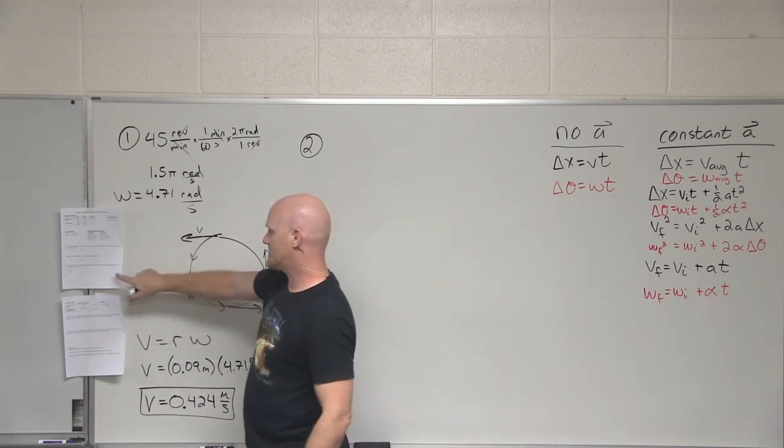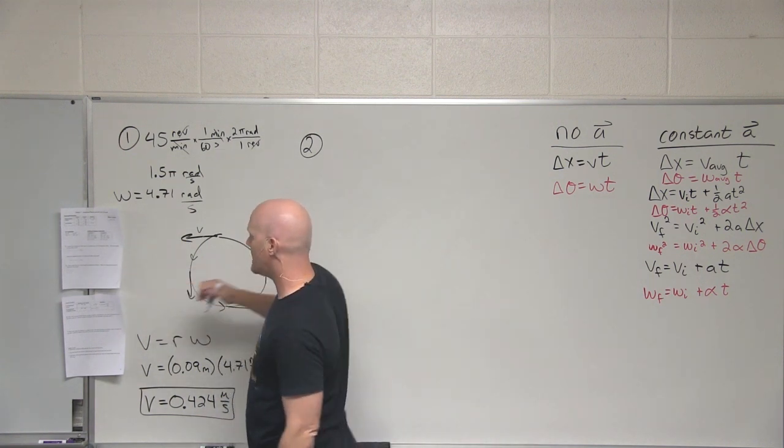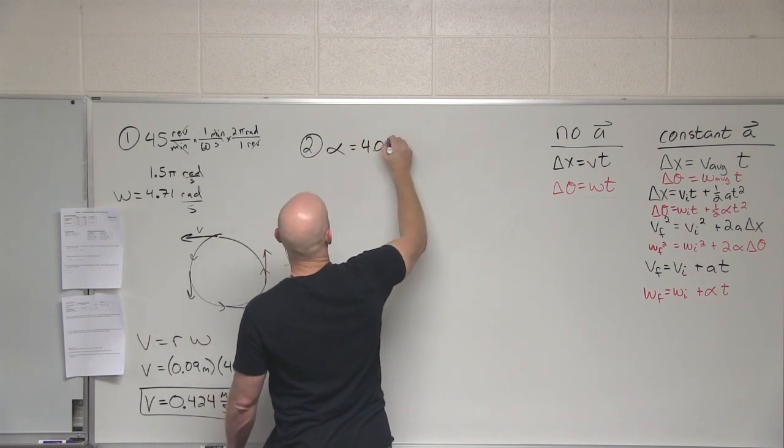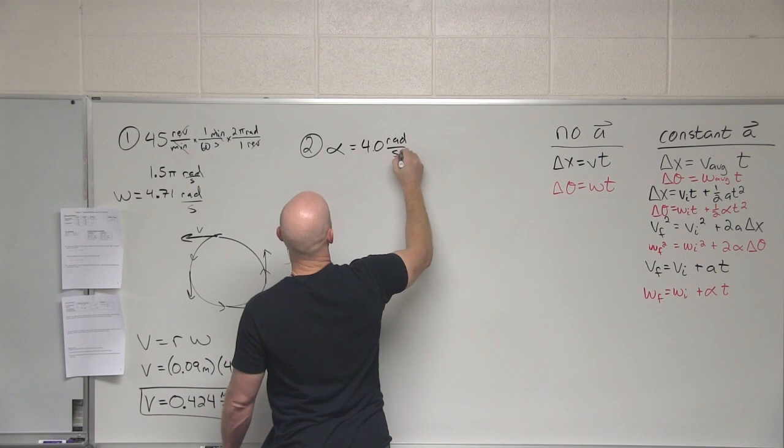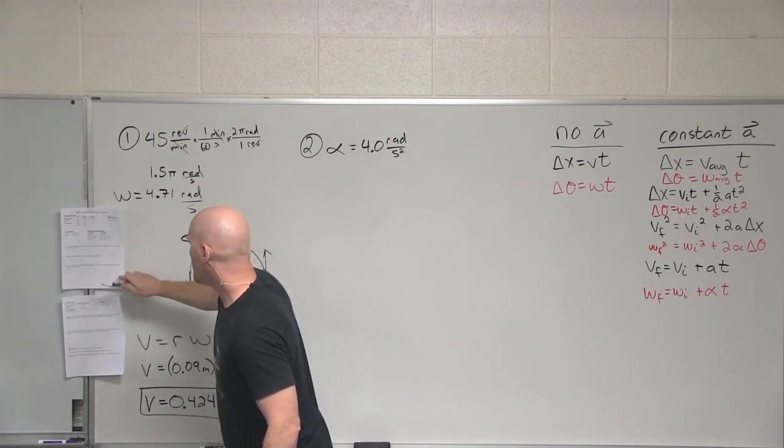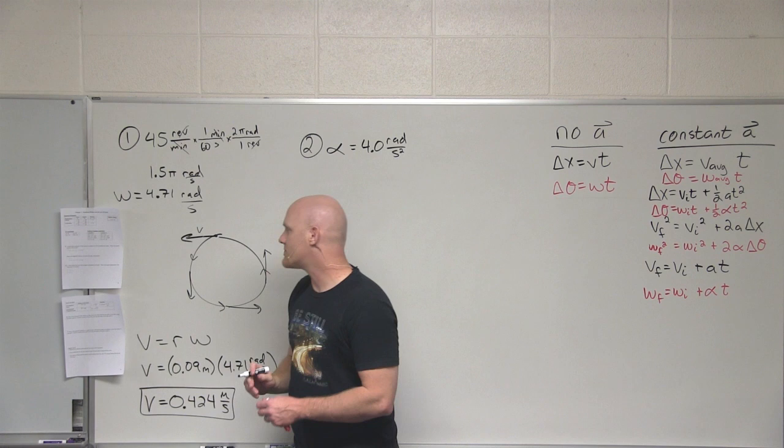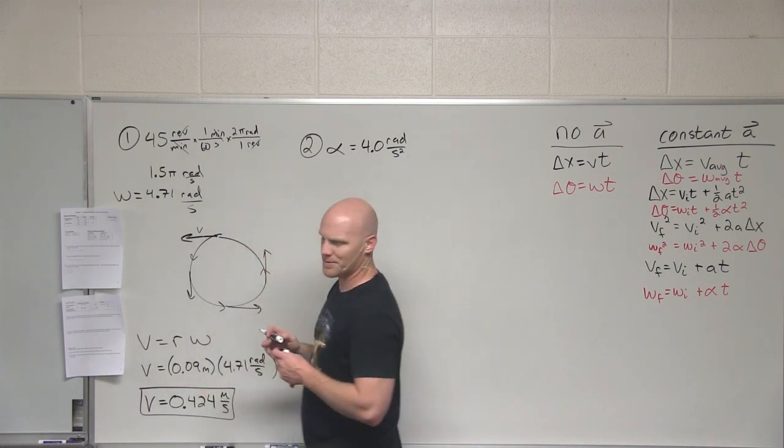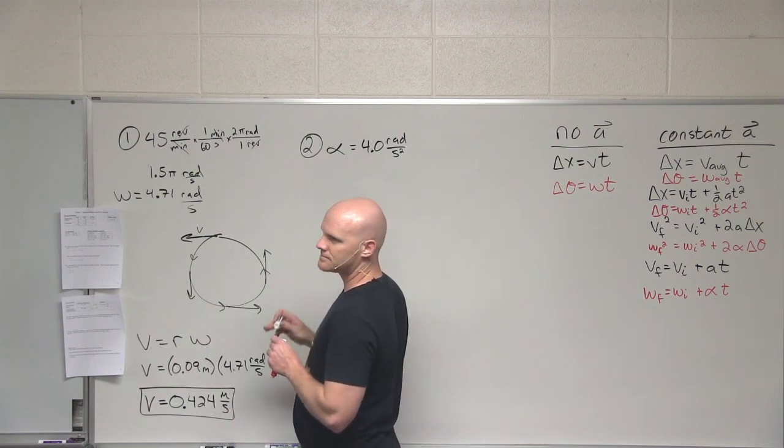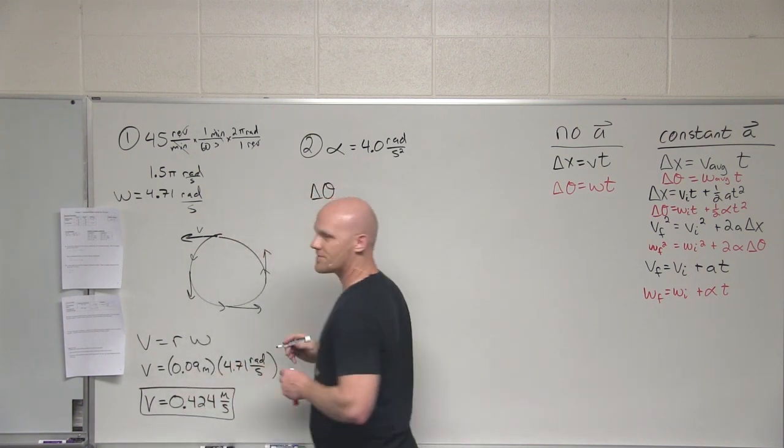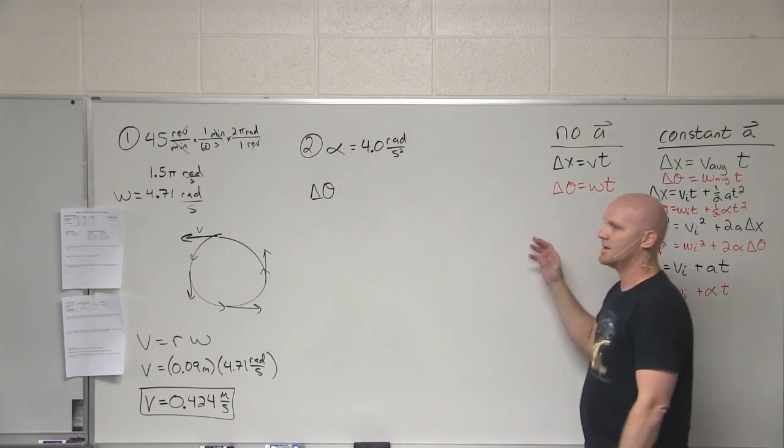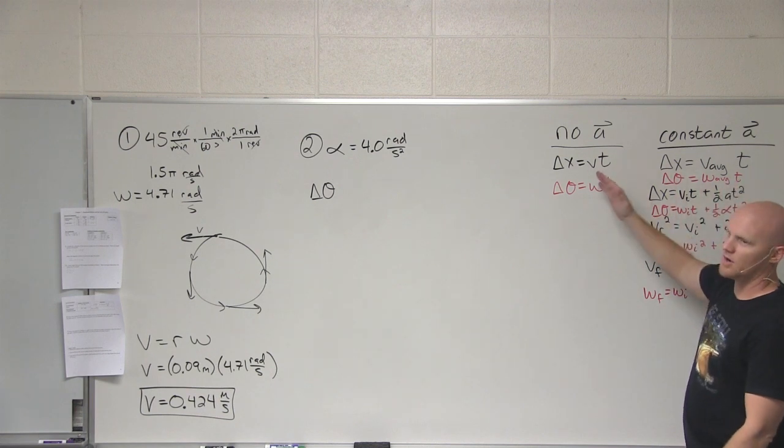Continuing on, number 2 says a wheel rotates from rest with an angular acceleration, alpha, of 4.0 radians per second per second, i.e. radians per second squared. What is the angular displacement of the wheel after 30 seconds? What are we actually being asked to solve for? What variable? Delta theta, angular displacement. Cool. In this case, we've got to ask ourselves a question. Do we have an acceleration? Angular acceleration? Yes or no? Yes. Okay, we're dealing with this.